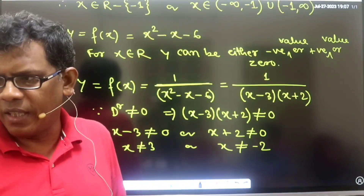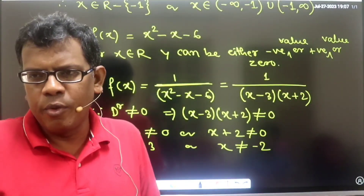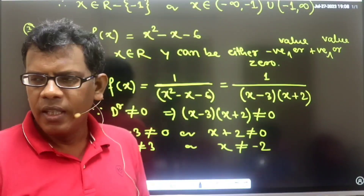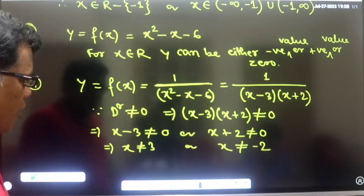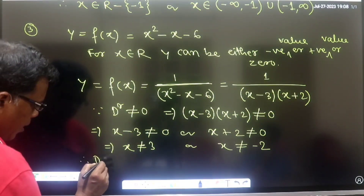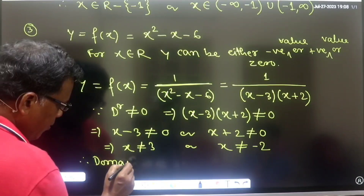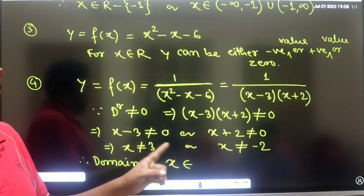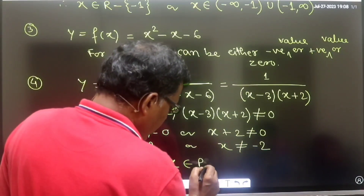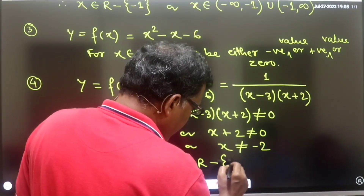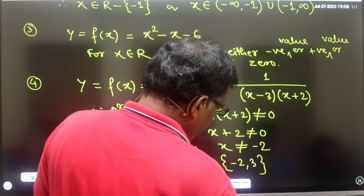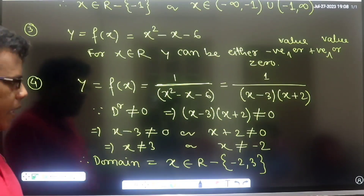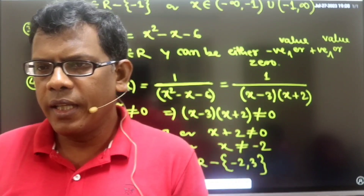Other than x = −2 and x = 3, we can substitute anything. Whether the denominator expression is positive or negative, it doesn't matter — as long as it's non-zero. Therefore, the domain of this function = x belongs to all real numbers minus {−2, 3}, i.e., ℝ − {−2, 3}. We simply remove −2 and 3 from the entire real number set.